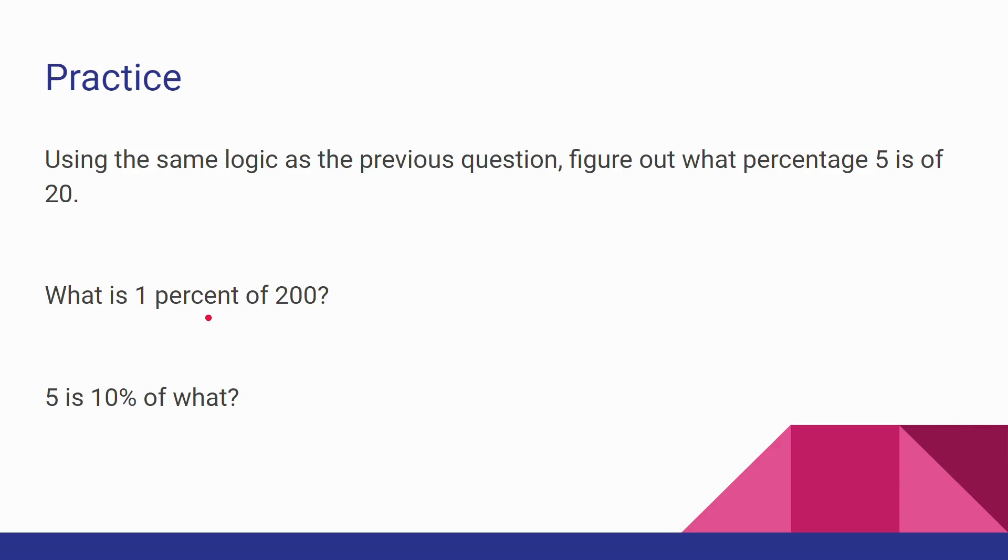And so 5 is 10% of what? This one requires a bit of thinking. It's just like the previous problems, you just have to put the variable or the missing number somewhere else. Alright, so in this case, we know that 5 is equal to 10 over 100 times an unknown number, let's say x. So if you solve it out, then 5 is 10% of 50.